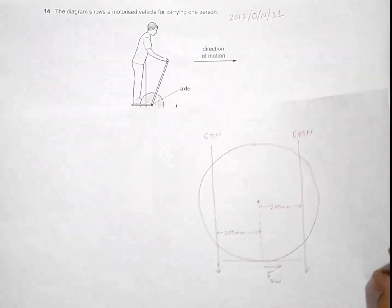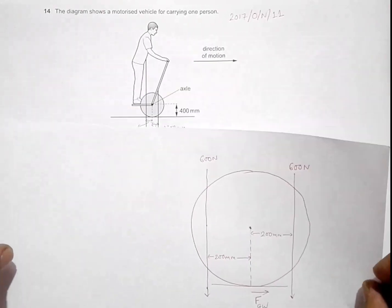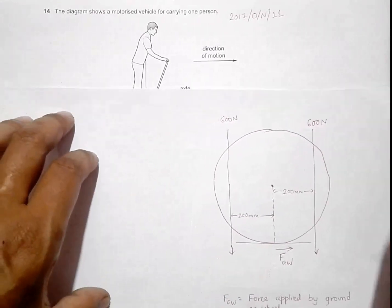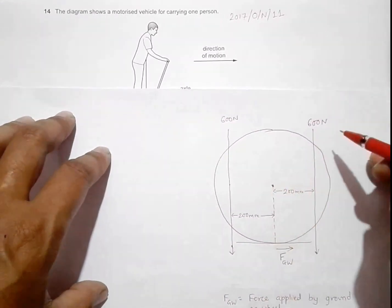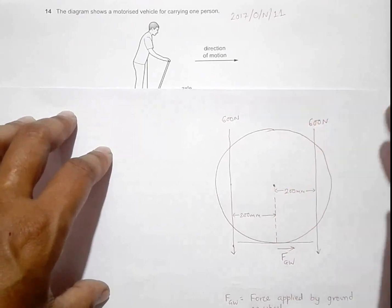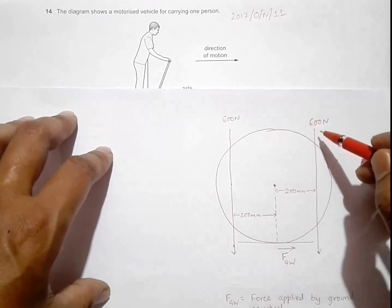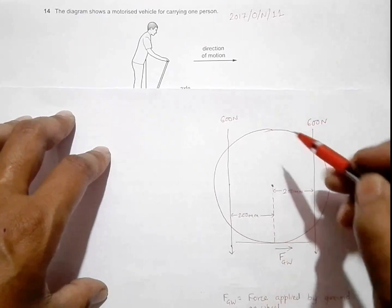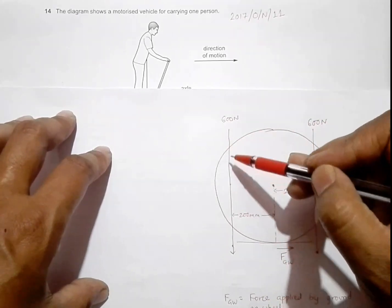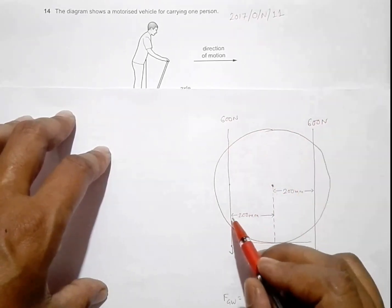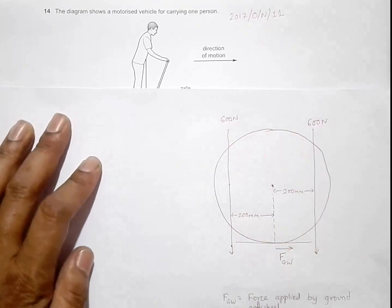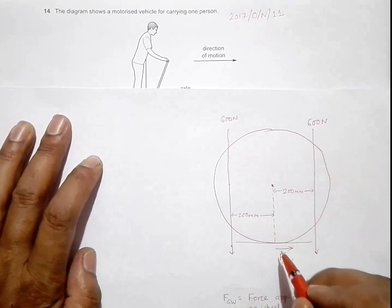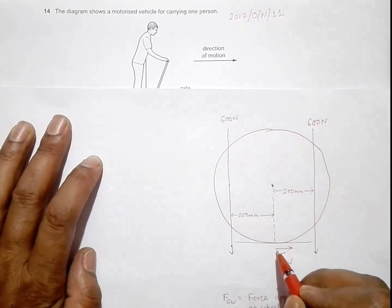Here is the enlarged diagram of the wheel. This is the axle of the wheel, this is the line of action of the center of mass of the machine at 200 millimeter from the axle, and this is the line of action of the center of mass of the person, also at 200 millimeter from the axle.